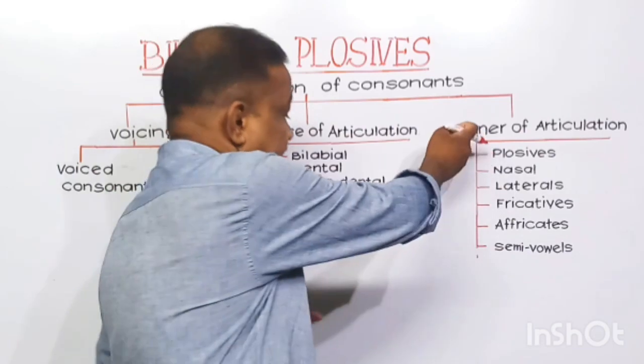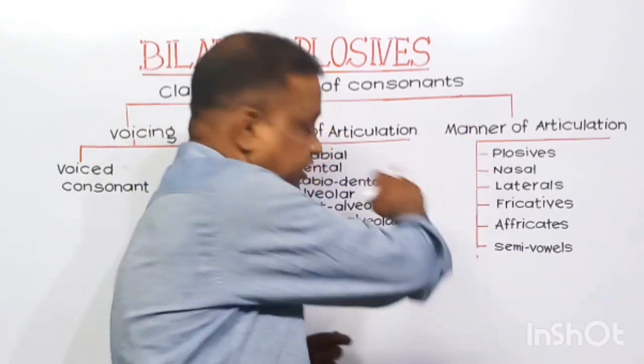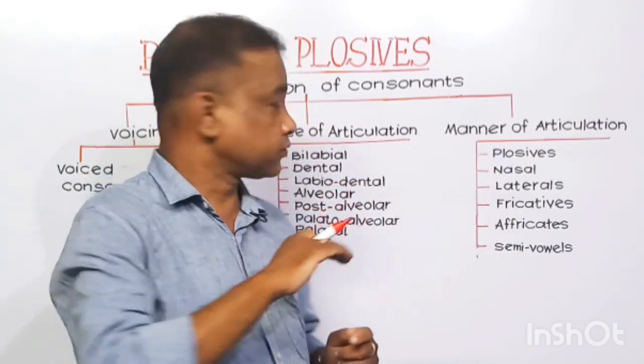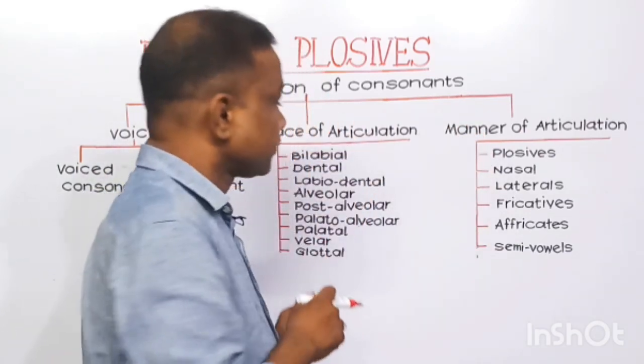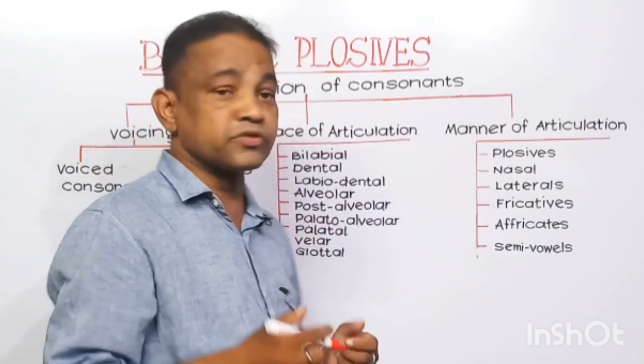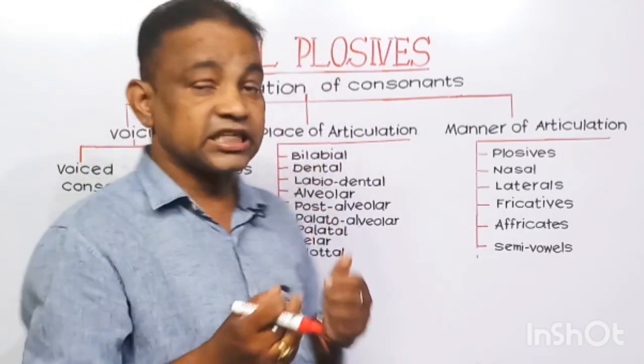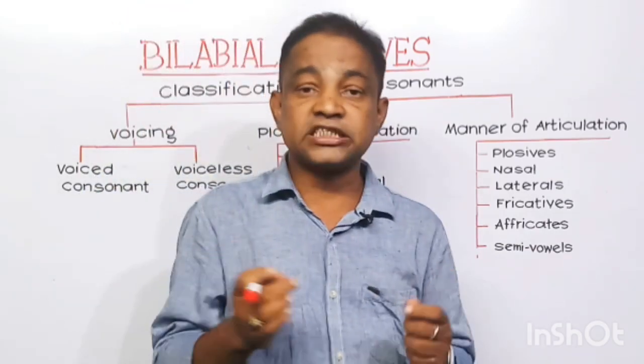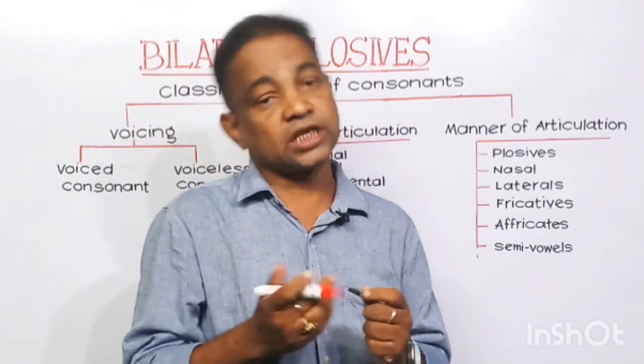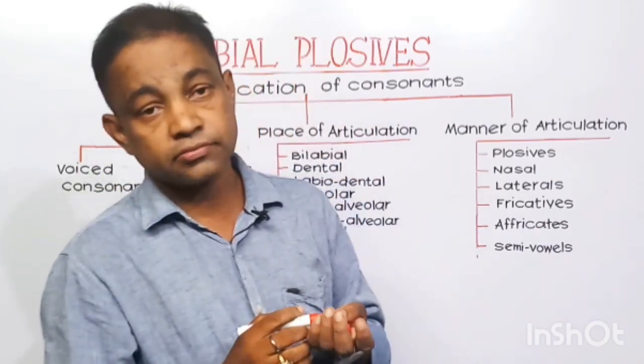And according to the manner of articulation, they are classified into six classes: plosives, nasals, laterals, fricatives, affricates, and semi-vowels.